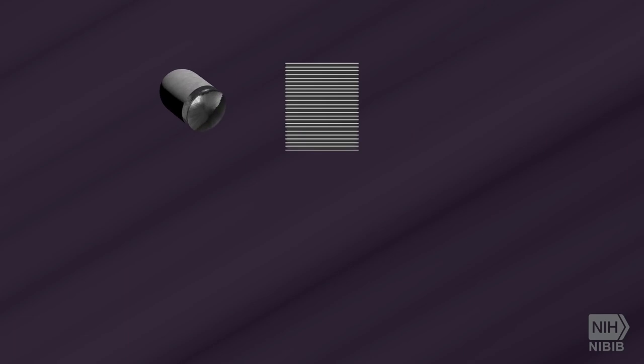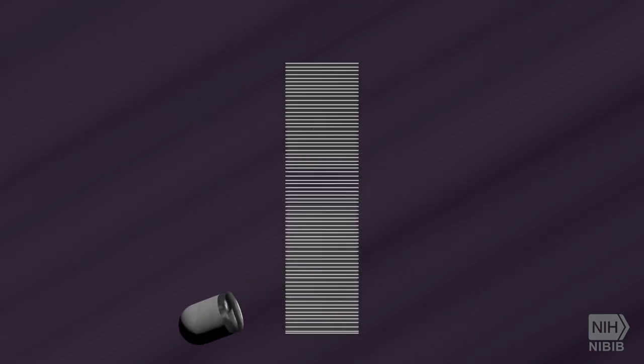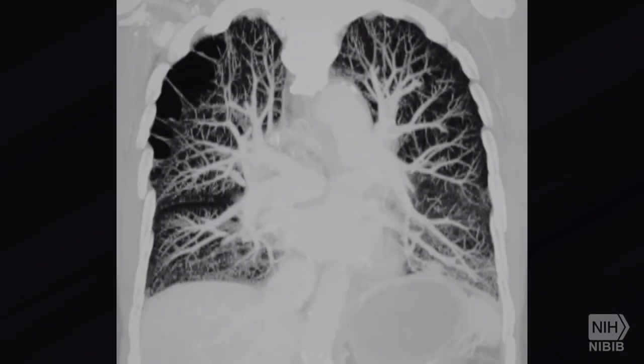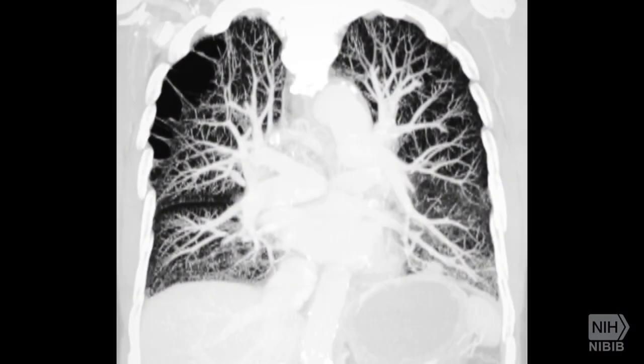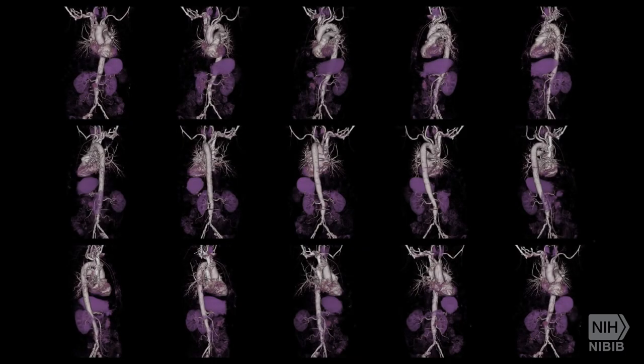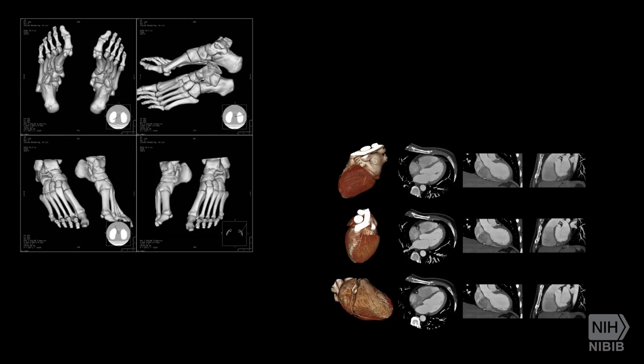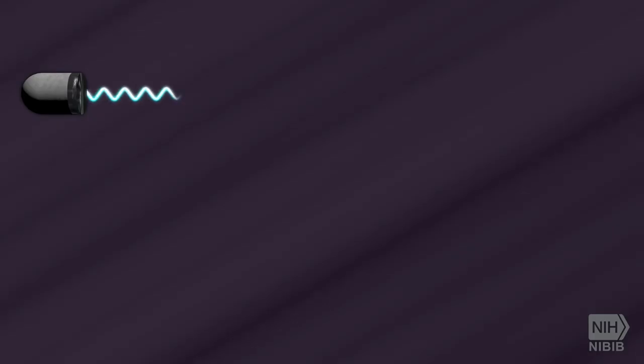A CT scan is an x-ray procedure that creates cross-sectional images with the help of computer processing. CT images are more detailed than conventional x-ray images and can reveal bones as well as soft tissue and organs.